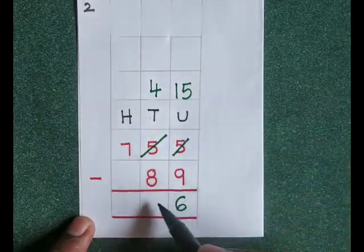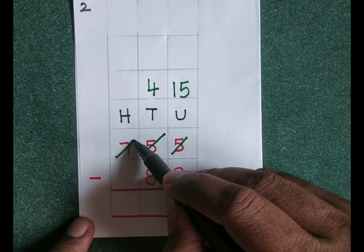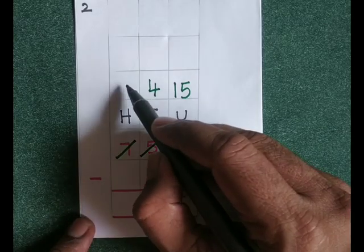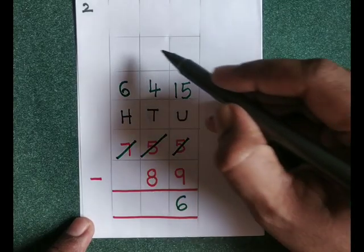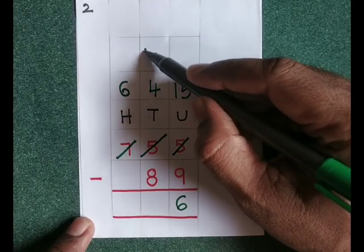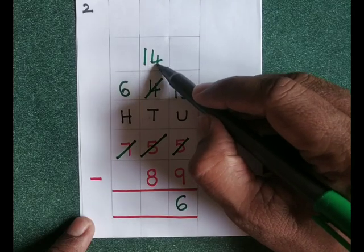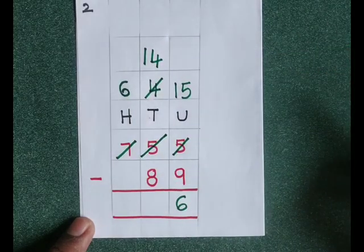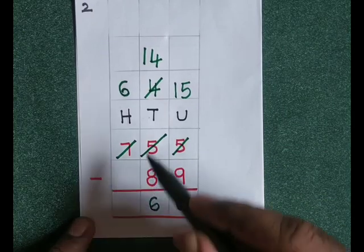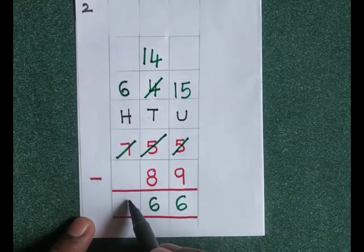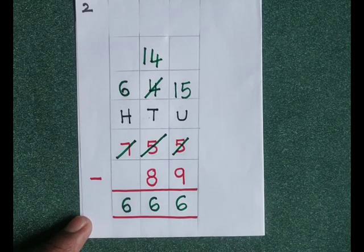Now 4 minus 8 — we can't do that, so we have to borrow from the hundreds place. There are 7 hundreds; if you borrow 100 it will become 600. That 100 means 10 tens, plus 4 tens gives us 14 tens. 14 minus 8 is 6. Then 6 minus nothing is 6. The answer is 666.